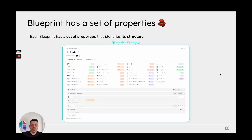Each blueprint has a set of properties. These properties define the blueprint structure, but that set of properties is completely customizable. When you define a blueprint, you are not limited by the number of properties or the types that you assign to them, and you can tailor the blueprint exactly to your needs and the structure that you require.